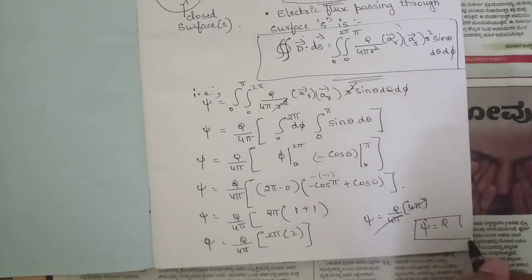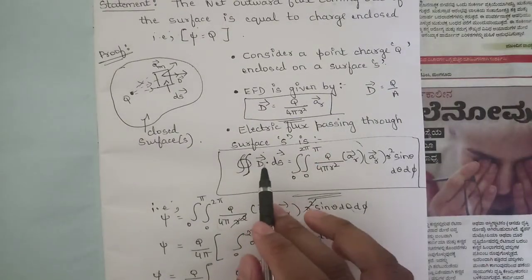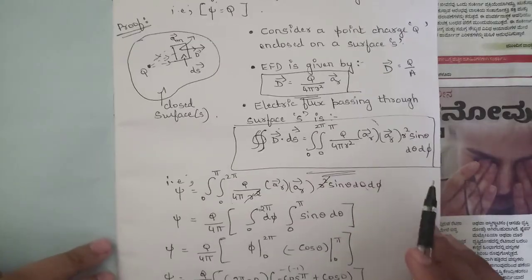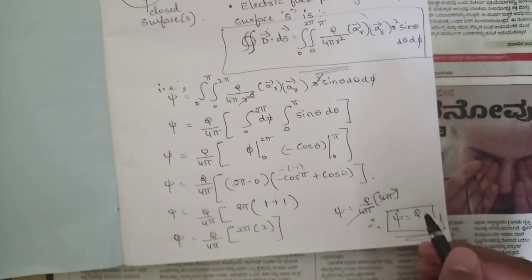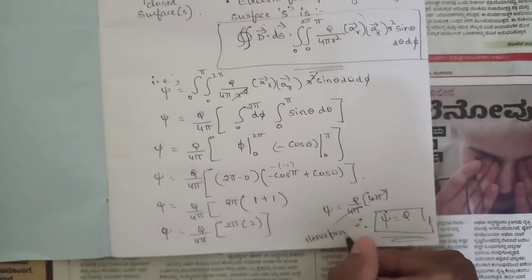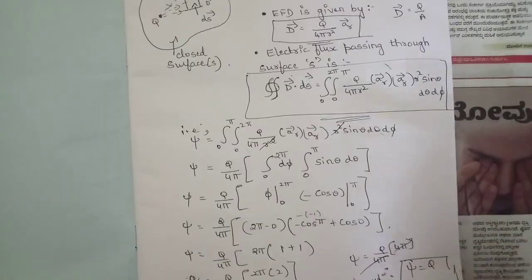The 4π cancels, giving ψ = Q. This proves Gauss's law: the outward flux coming out of a closed surface equals the enclosed charge Q. By using the electric flux density D and the surface integral, we derived the fundamental result of Gauss's law — hence proved. This derivation is very important, so make a note of it.